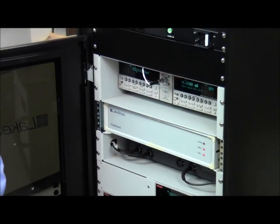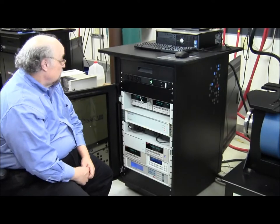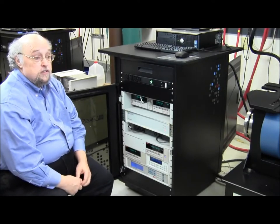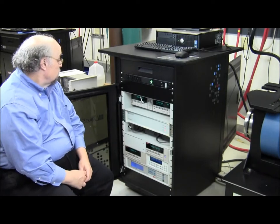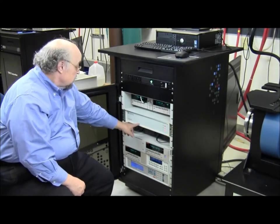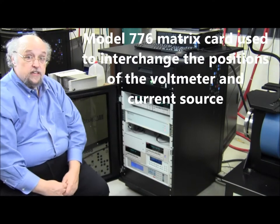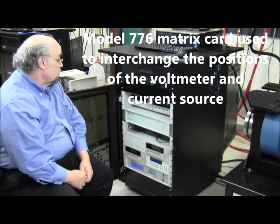To do a hall measurement you need to be able to interchange the positions of the voltmeter and current source to measure resistivity and hall voltages. So in order to do that you need a matrix card and that's what this box is. It's the Lakeshore Model 776 HMS Matrix Card.